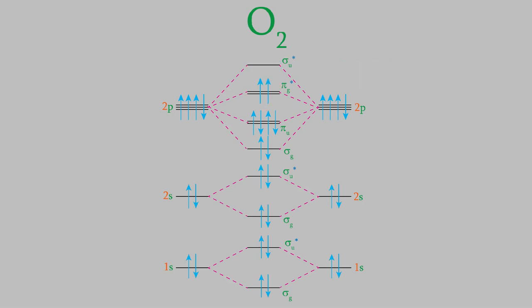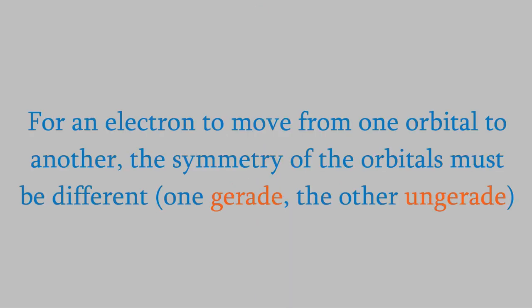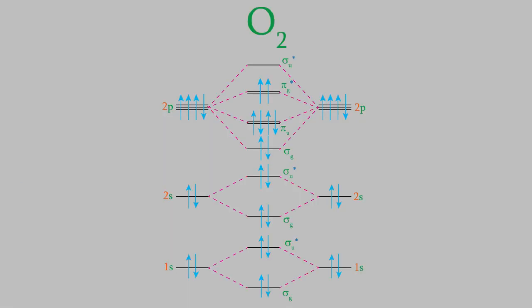Molecular orbital diagrams also have implications in spectroscopy. A molecule absorbs light if the light wave has an energy exactly corresponding to the energy difference between the HOMO and the LUMO. However, there's one catch: in order for light to be absorbed, the symmetry of the beginning and ending orbitals must be different. In other words, if the HOMO is gerade, then the LUMO must be ungerade, or vice versa. In this example, the HOMO is a gerade orbital and the LUMO is ungerade, so it is possible for a photon to be absorbed and cause the electron to move from one orbital to the other.